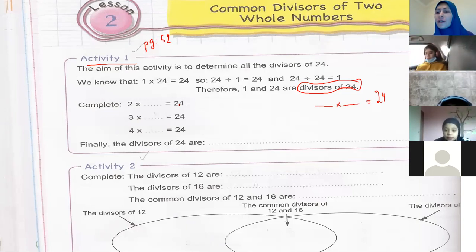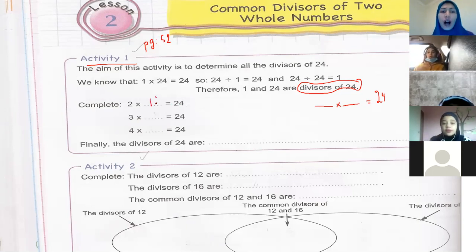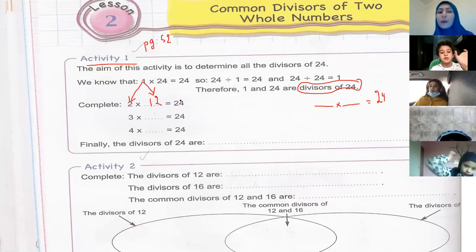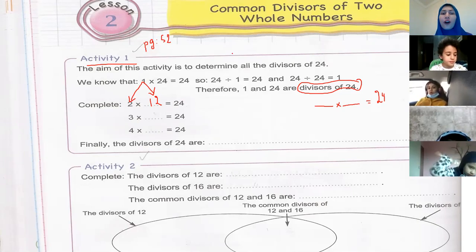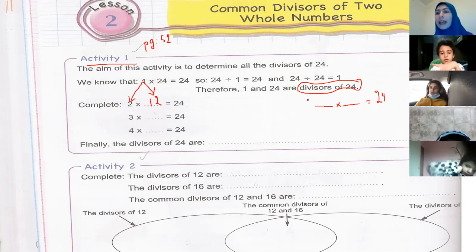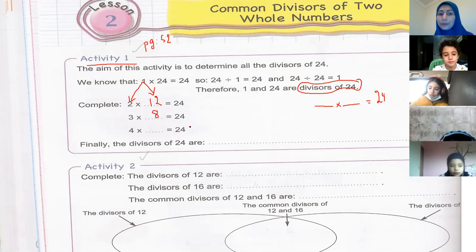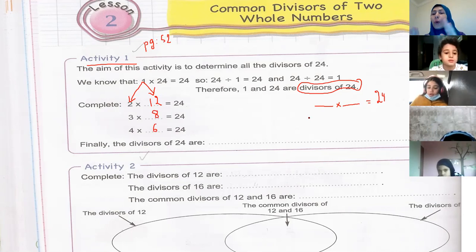Two times 12 equals 24. Excellent! So what can we say about 2 and 12? We call them divisors. Also, three times which number equals 24? Six! Excellent. And four times which number equals 24? Six!